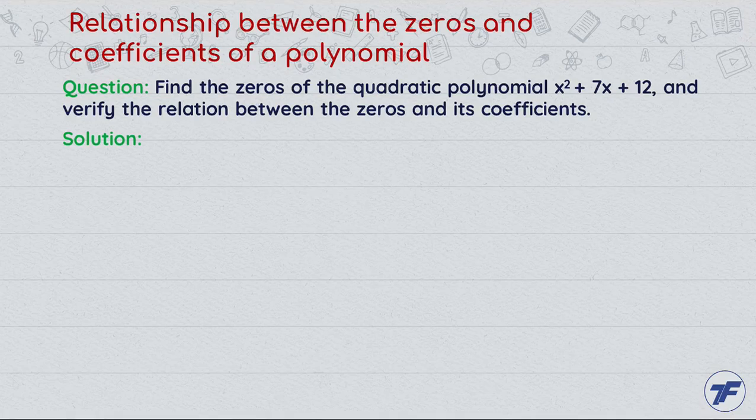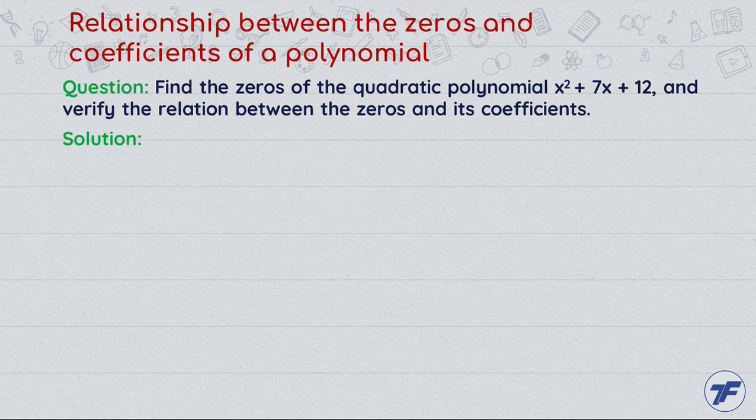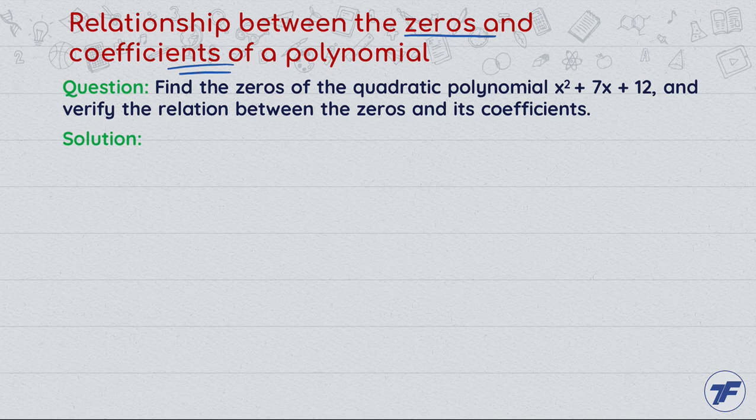Let us now talk about a question related to the relationship between zeros and coefficients of a polynomial. The question says find the zeros of the quadratic polynomial x² + 7x + 12 and verify the relationship between the zeros and the coefficients.